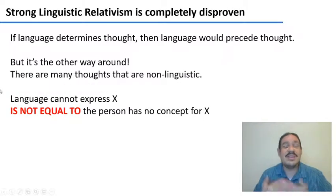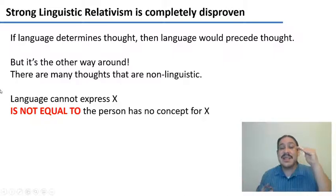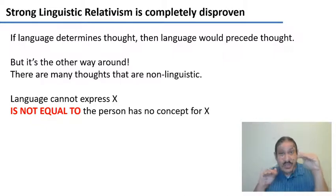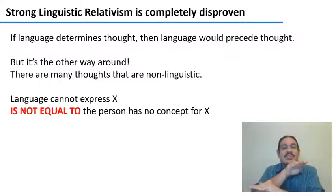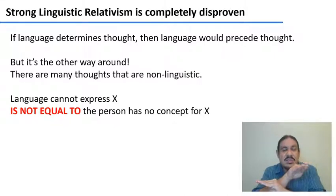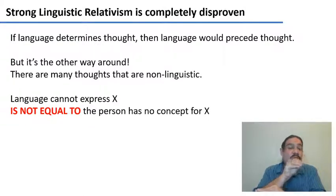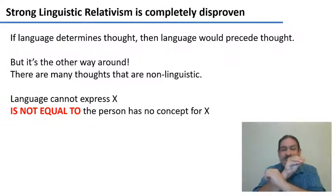But most importantly, if language determined thought, it would mean that language comes first and thought comes second. But if anything, it's probably the other way around — we have a ton of thoughts that are non-linguistic. So even if we don't have a specific word for something, it doesn't mean that we can't think about it.